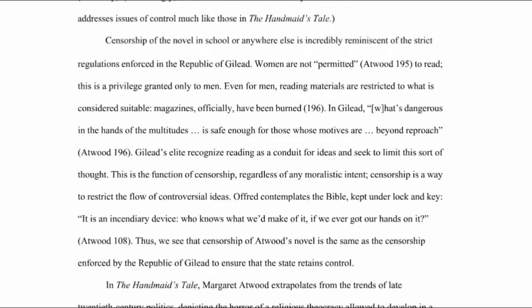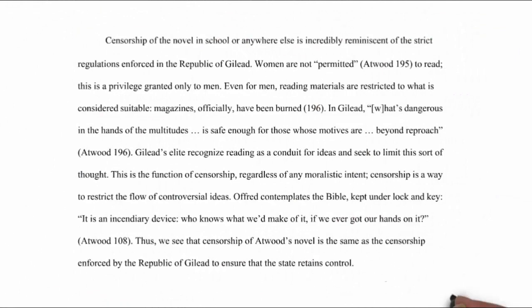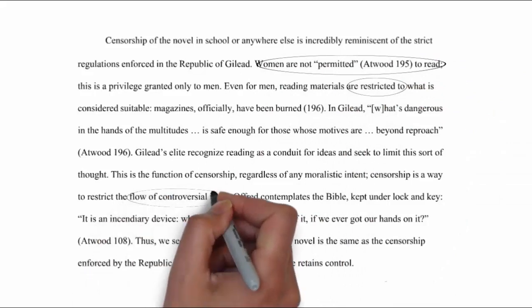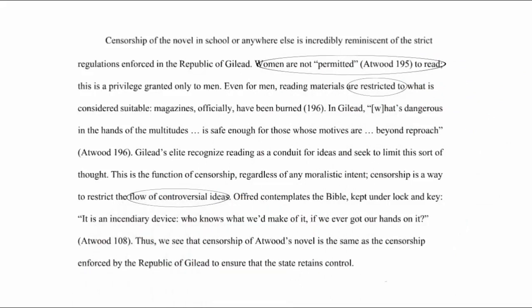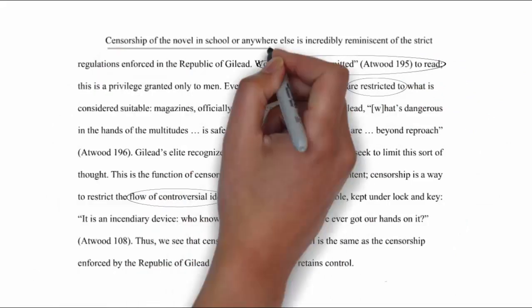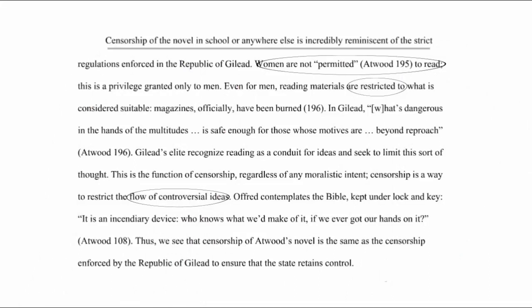For example, this paragraph covers the censorship in Gilead. It talks about how women are not prepared to read, reading materials are restricted for men, and that the censorship aims to control the flow of ideas. The topic sentence — "Censorship of the novel in school or anywhere else is incredibly reminiscent of the strict regulations enforced in the Republic of Gilead" — effectively summarizes the main idea of the paragraph, which is censorship in Gilead, so I can use it in my outline.